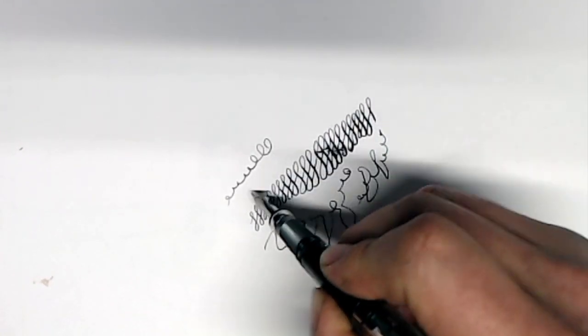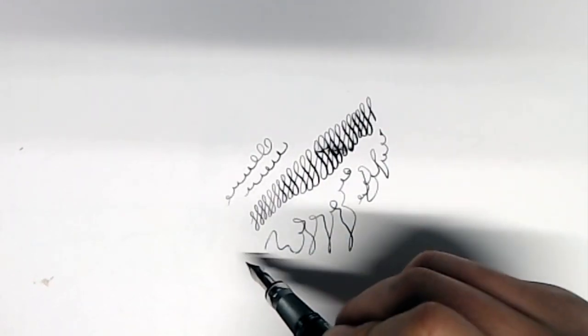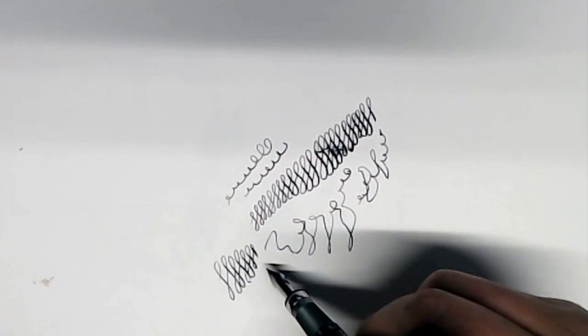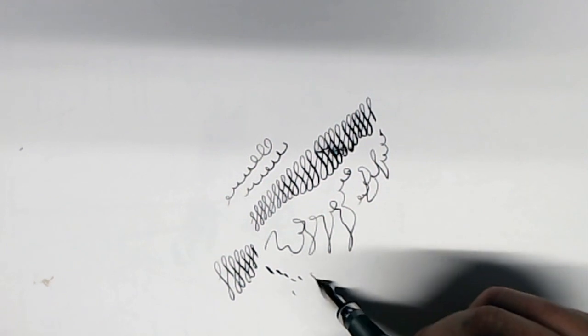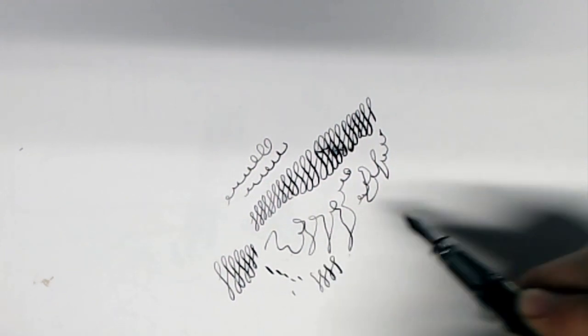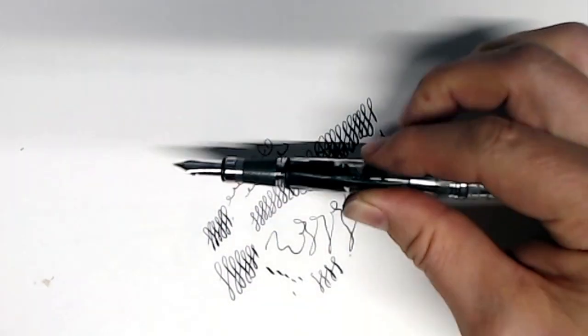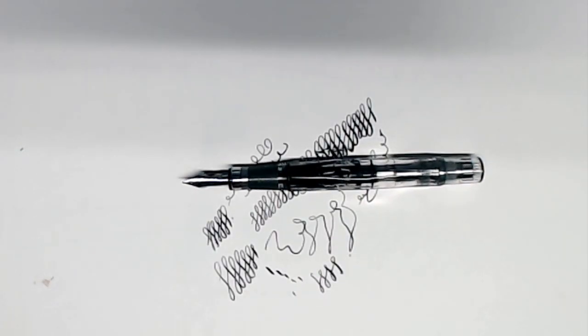One of my favorite pen bodies from Twsbi. Really sturdy, really well built. It'll probably run you around $60 unless you get some kind of special edition version. So one really great option that you can use with the FPR Ultraflex nib.